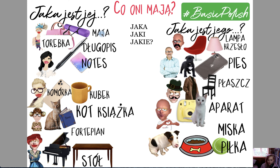I'm going to use Jaka for bag as well, because torebka is feminine. Jaka jest jej torebka? — What is her bag like? And I would like you to answer: her bag is light pink. Jaka jest jej torebka? Her answer: Jej torebka jest jasnoróżowa. So jasno means light, różowa because we are talking about torebka.